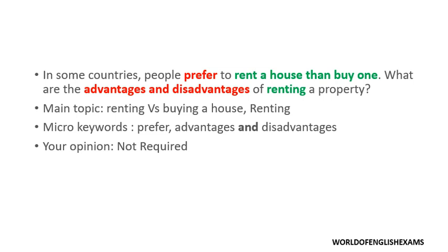Do not confuse between these words. People here are not so interested in purchasing a house; rather, they're interested in renting — in being a tenant. Now the question asks: 'What are the advantages and disadvantages?' Both these words are in the plural form, which means you need to provide at least two advantages and two disadvantages in the body paragraphs. You should not confine yourself to writing just one advantage and one drawback.